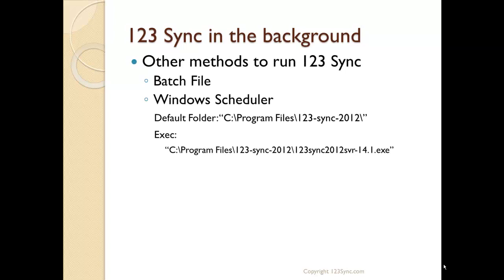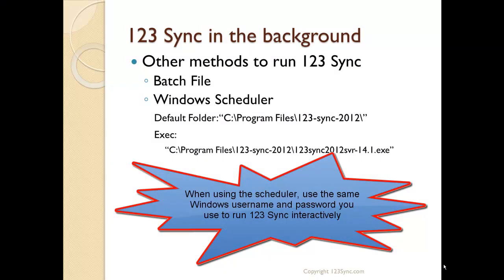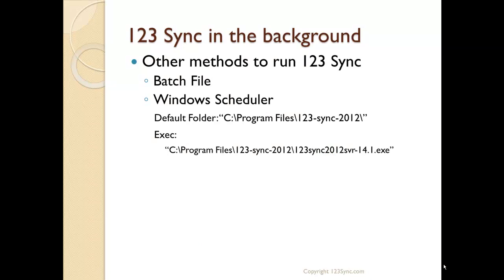There are other methods to run 123Sync. Now that we've covered running it interactively or through a shortcut, you can also create batch files that call 123Sync, or have it go through Windows Scheduler or Windows Task Manager where you set the default folder and a timer and then call the executable. Just make sure when you use the scheduler, like a Windows service, that you use the same username and password that you used when setting up 123Sync. Log in as that particular user and then run the scheduler — don't run it as a different user because that won't work.